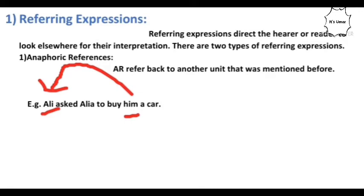Anaphoric references refer back to another unit that was mentioned before. For example: 'Ali asked Alia to buy him a car.' Here, the word 'him' refers back to another unit that was mentioned before, and that unit is Ali. 'Him' refers back to Ali. Such kind of reference is called anaphoric reference, where we refer back to a unit that was already mentioned.